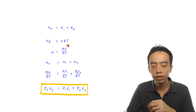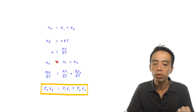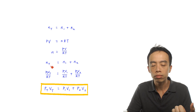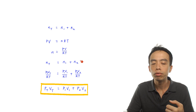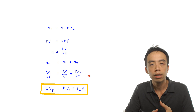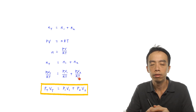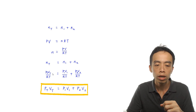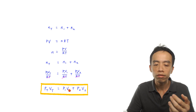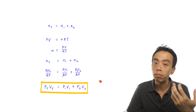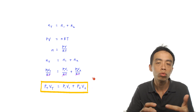Since PV equals nRT, the number of moles equals pressure times volume divided by RT. Substituting back: n_total = P_total × V_total / RT, n1 = P1V1 / RT, and n2 = P2V2 / RT. Since temperature is constant, RT is the same in all three terms, so we can cancel all denominators. We end up with the expression: P_total × V_total = P1V1 + P2V2. We can use this expression to calculate the final pressure when the two gases are allowed to mix.